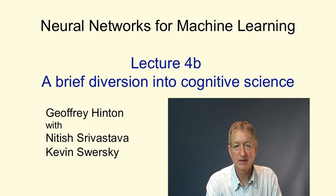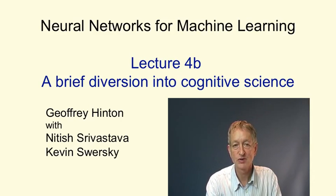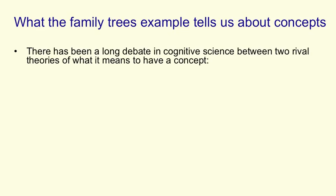We're now going to talk a little bit about an issue that's of interest to cognitive scientists, but may not be of much interest to engineers. So if you're an engineer, you can just ignore this video. In cognitive science, there's been a debate going on for nearly 100 years about the relationship between feature vector representations of concepts and representations of concepts via their relations to other concepts. And the learning algorithm we've just seen for family trees has a lot to say about that debate. We're now going to make a brief diversion into cognitive science.